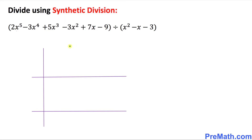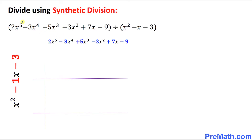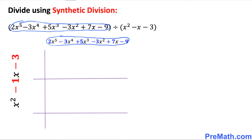Let's get started. The very first step is to draw this kind of chart — a double t-chart. This part we call the dividend, and I just wrote it down on the top of this chart. As far as the divisor is concerned, I put the divisor on the left-hand side — make sure it should be on this side.